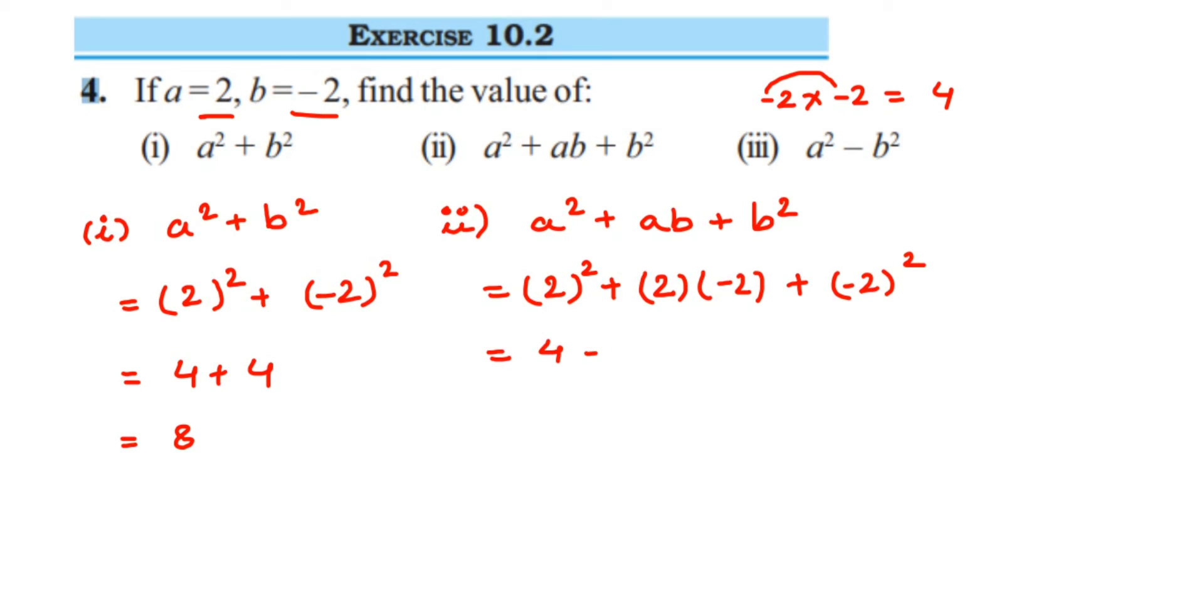Now we're going to open the brackets. 2 squared is 4, plus 2 times 2 is 4 but with a negative sign, so it becomes minus 4. Plus minus 2 squared is 4. So it becomes 4 minus 4 plus 4. The minus 4 and plus 4 cancel out, so the answer is 4.